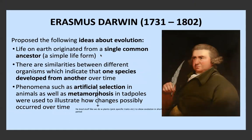The ideas that Erasmus Darwin proposed were firstly that life on earth originated from a single common ancestor — a very simple life form — which we know is an important part of evolution today. He also said that similarities between different organisms indicate that one species developed from another over time, which relates to homologous structures, analogous structures, and modification by descent. He also used tadpoles in his experiments to explain phenomena such as artificial selection in animals and metamorphosis, showing how changes possibly occurred over time.